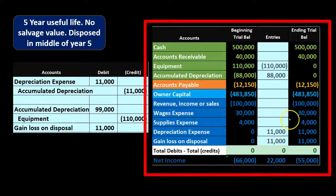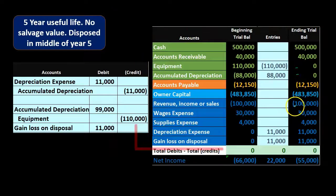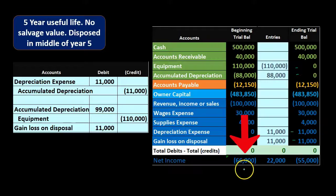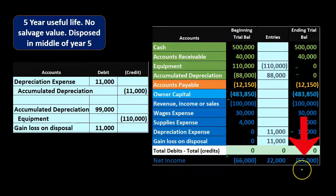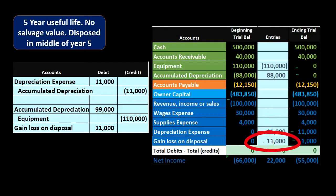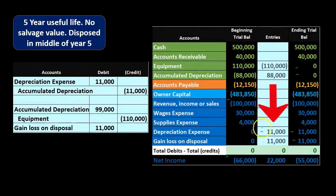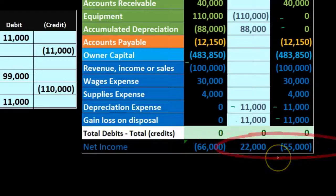Looking at all the accounts, we have accomplished what we want: the equipment is off the books, depreciation has been recorded, and the loss has been recognized. Net income was at $66,000 and it decreased by the $11,000 depreciation expense and by the $11,000 loss on disposal — a total decrease of $22,000. This happened because we disposed of something not fully depreciated, requiring us to record the remaining depreciation and the resulting loss, bringing net income down by $22,000 to $44,000.